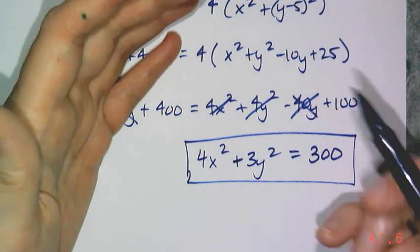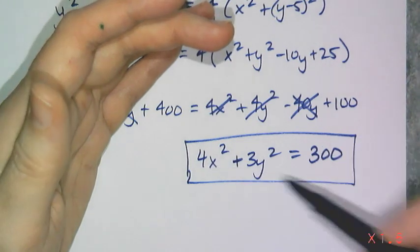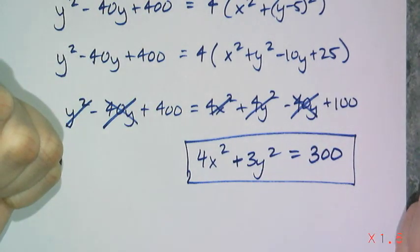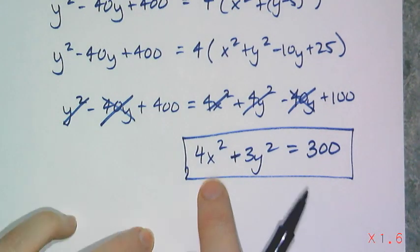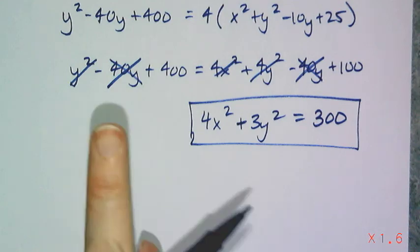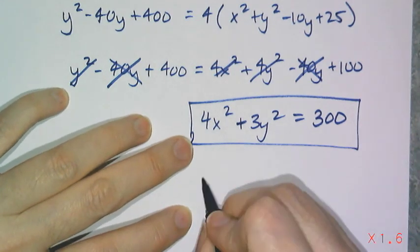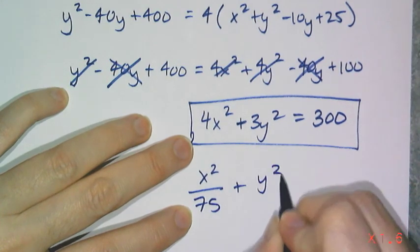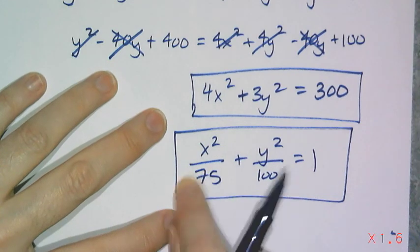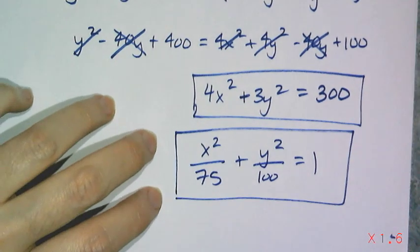There is another version of the equation that is super useful. If you divide 4x²+3y²=300 by 300 on both sides, you get x²/75 + y²/100 = 1. This is the standard form, and it's super useful because the 75 and 100 actually relate to the physical properties of the ellipse. Let's graph that ellipse and figure out what those properties are.